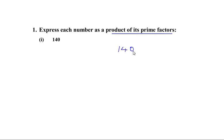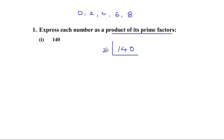Let me take 140. Remember that if a number ends with an even number like 0, 2, 4, 6, or 8, then that number is definitely going to be divisible by 2. So here let me divide 140 by 2. 2 is also a prime number — remember that when you take a number for repeated division, always choose a prime number. So 2 times 70 is 140. Now again the number ends with 0, that means 70 is definitely divisible by 2.